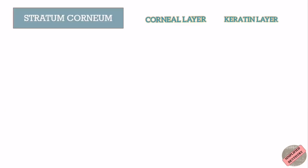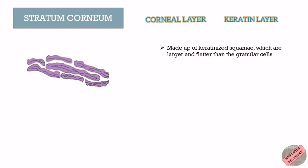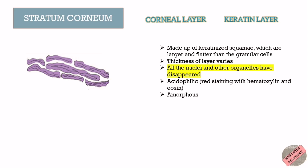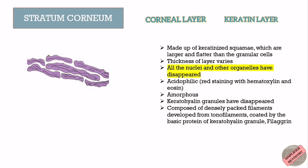The stratum corneum is made up of keratinized squama, which are larger and flatter than the granular cells. The thickness of stratum corneum varies at different sites in the oral cavity and is thicker than most areas of the skin. All nuclei and other organelles such as ribosomes and mitochondria have disappeared. This layer is acidophilic — staining red with hematoxylin and eosin — and is histologically amorphous. The keratohyaline granules have also disappeared, and ultrastructurally the cells are composed of densely packed filaments developed from tonofilaments, altered and coated by the basic protein of the keratohyaline granule, filagrin.